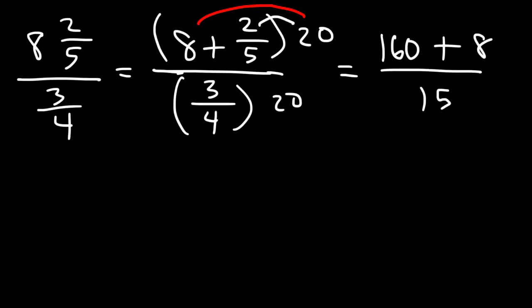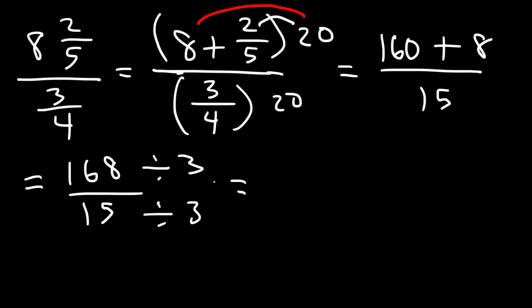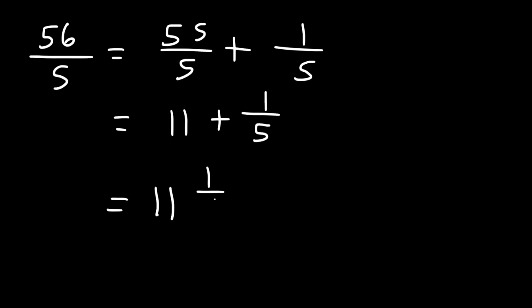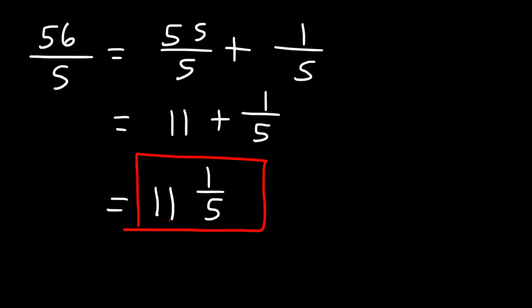At this point we add 160 plus 8 to get 168 over 15, and then we need to convert this into a mixed number. But first, can we simplify? 168 is divisible by 3: 168 divided by 3 is 56, and 15 divided by 3 is 5, so we have 56 over 5. We can split that into 55 over 5 plus 1 over 5 — 55 over 5 is 11 — so we get 11 and 1 fifth, which was the answer to the first problem.